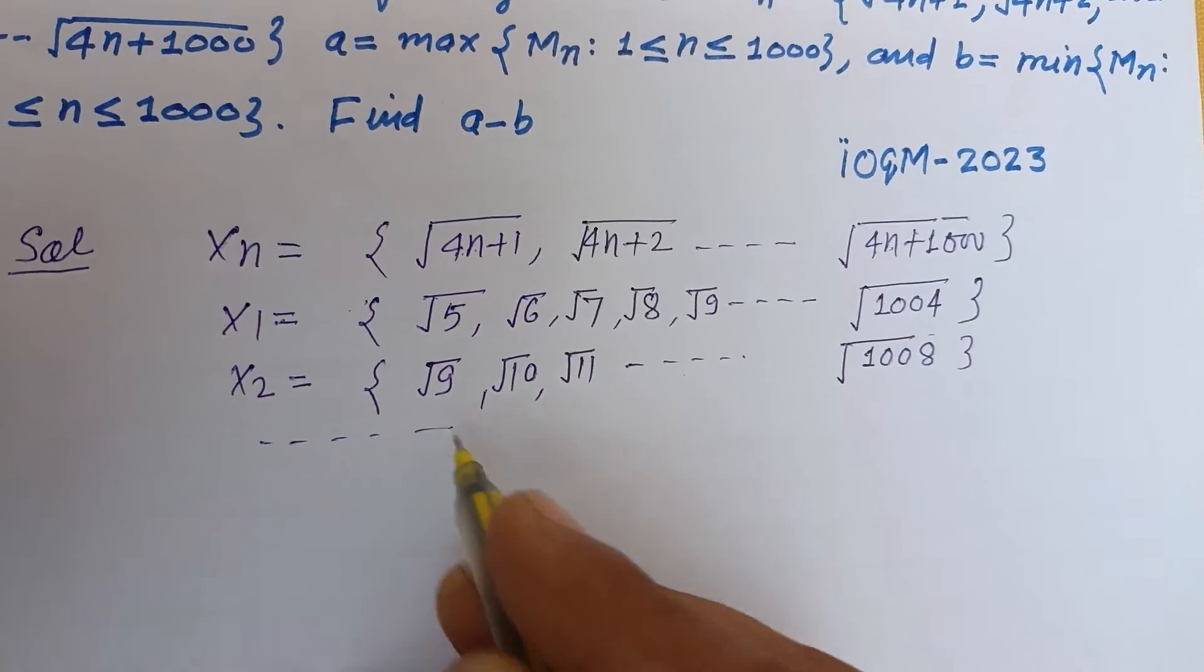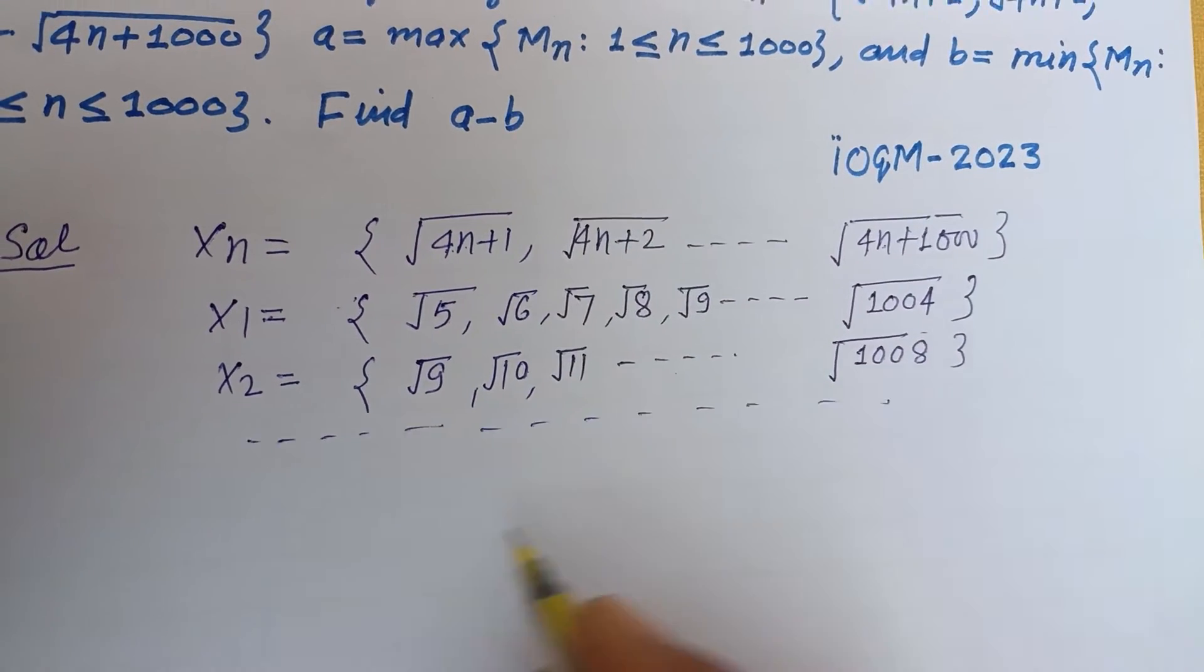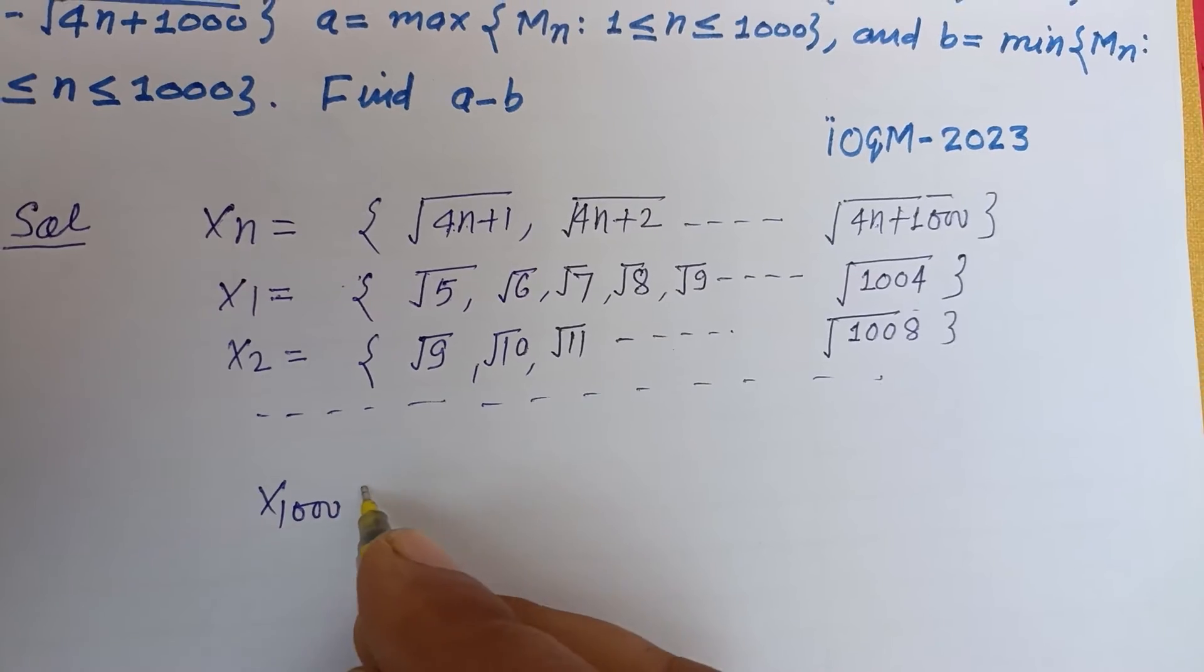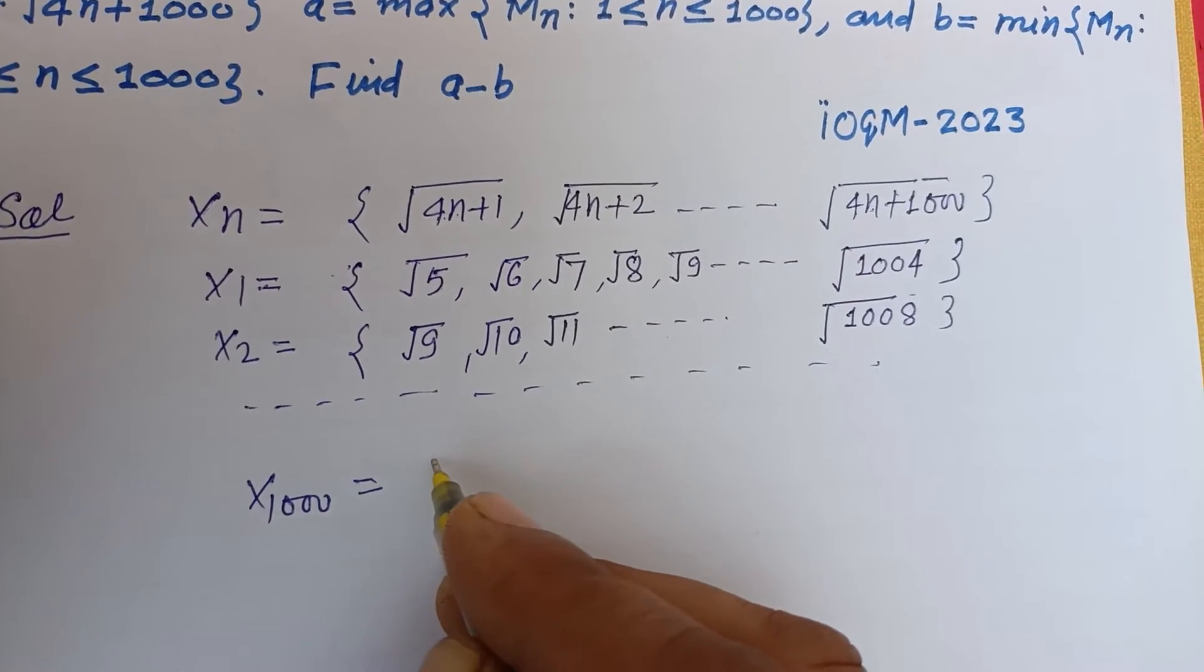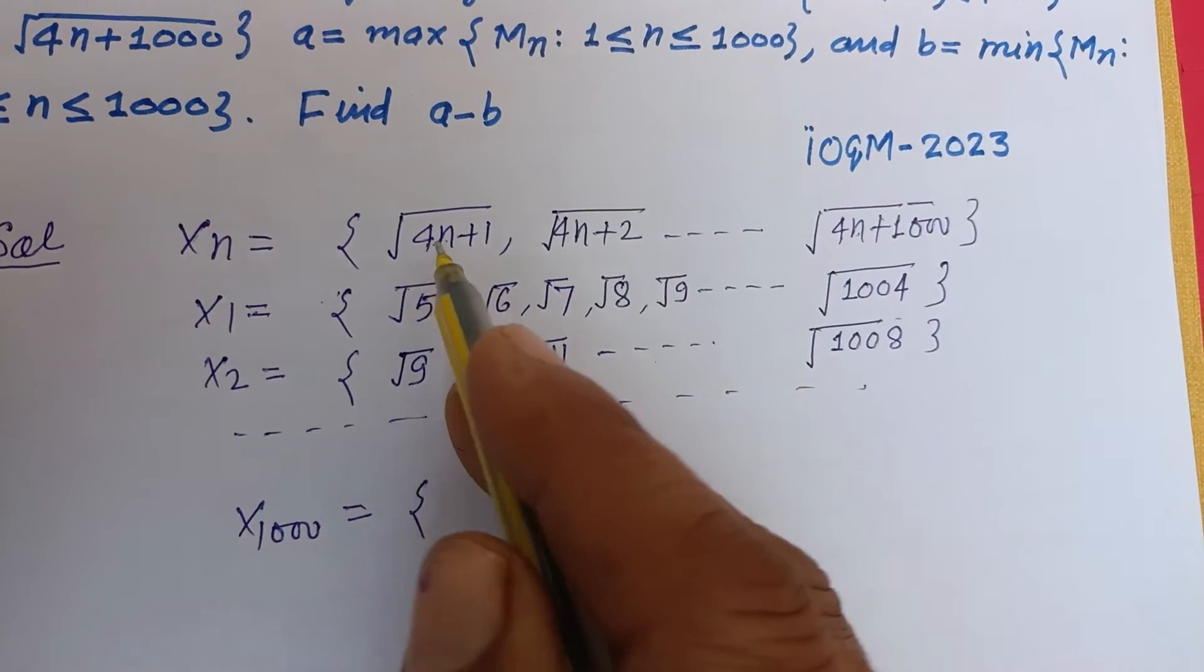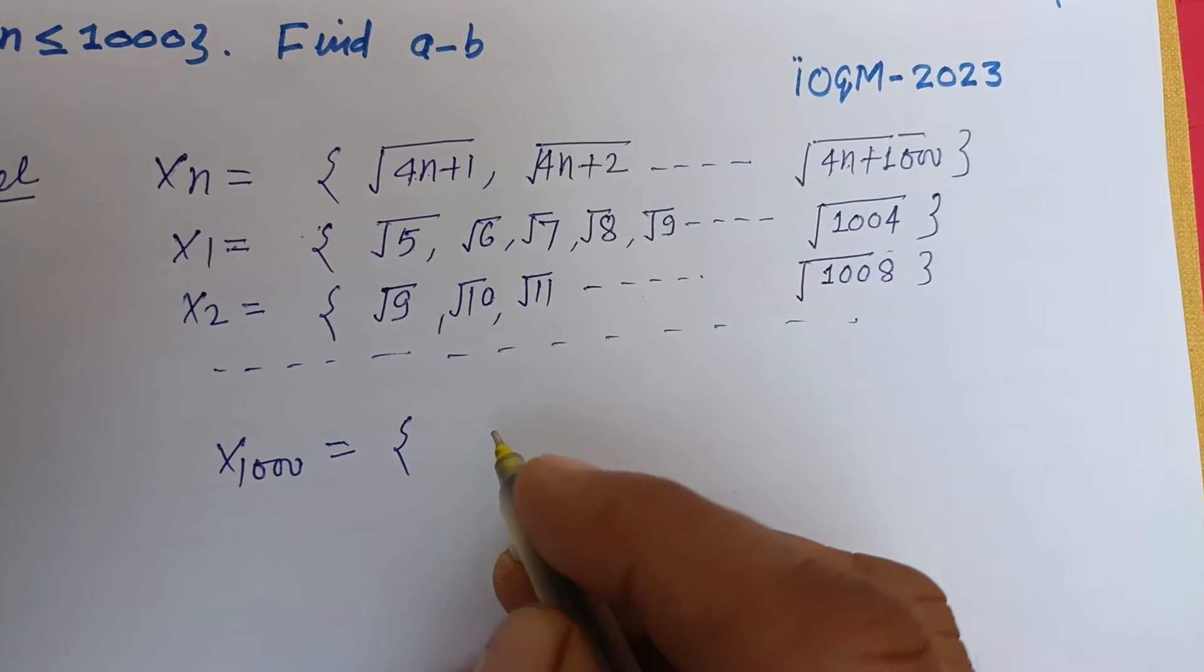This way we get the last set which is X1000, and this will be 1000×4 = 4000, so √4001, √4002, and so on. This is 4000 plus 1000 = √5000.